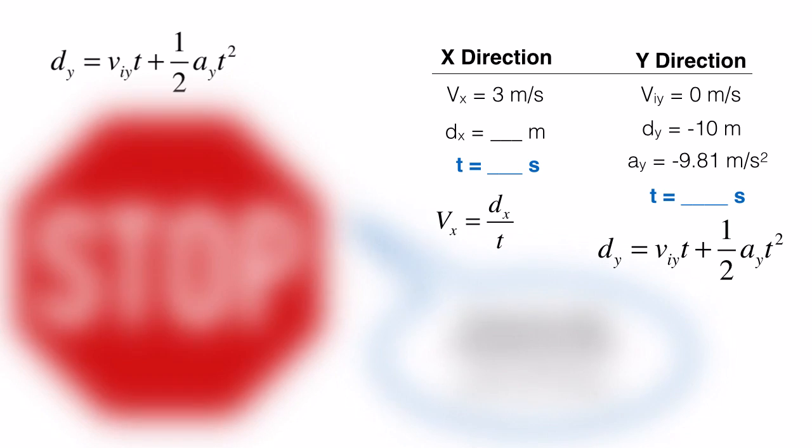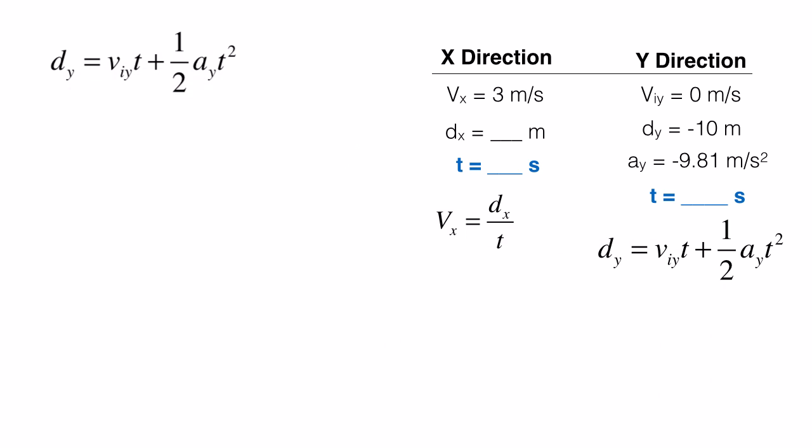Alright, so to find it we have all the information we need in the y direction. So we simply take those numbers and plug it into our formula. Rearrange it algebraically to solve for time. And put it in our calculator to find time is 1.42784 seconds. Now we're going to need to keep all those values because we're not quite finished with the problem yet. I'm just going to write down 1.4 into the information that we now know.